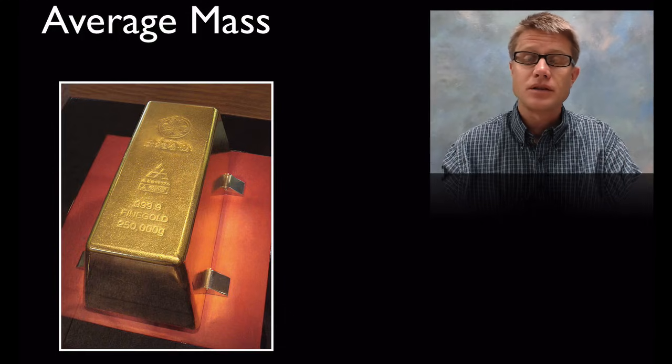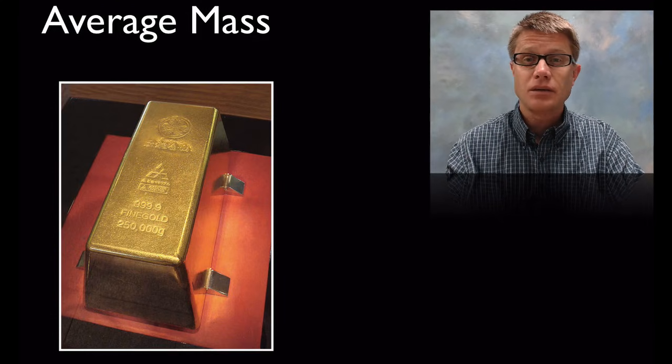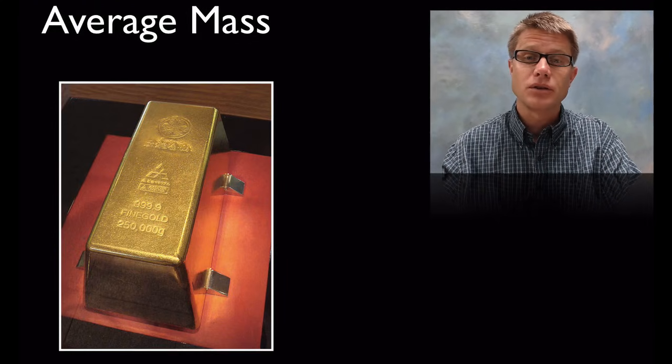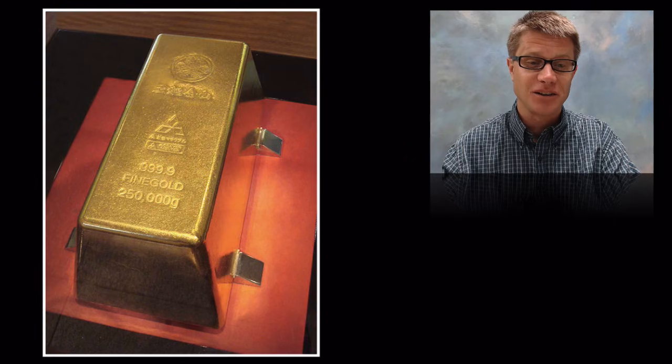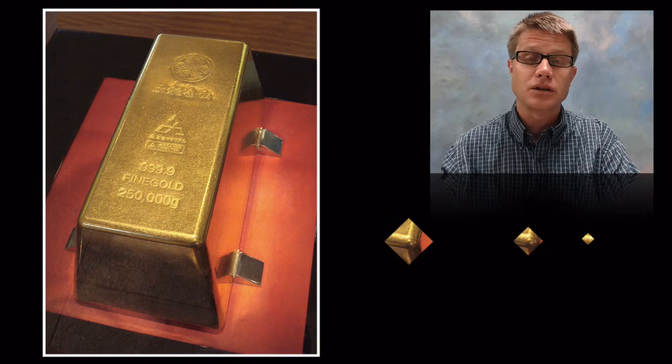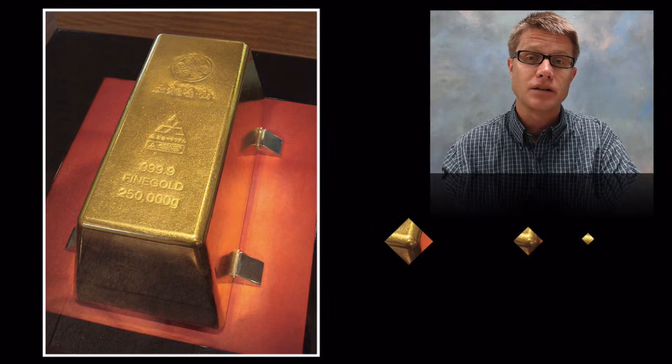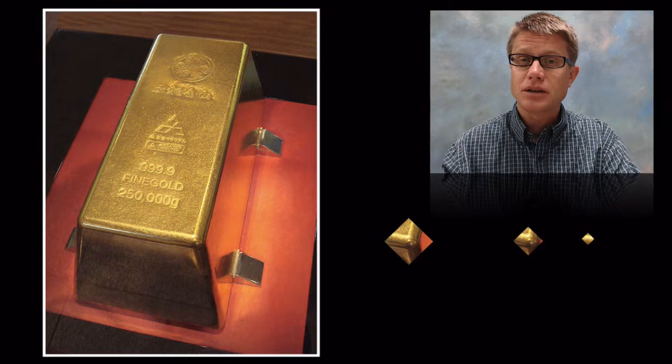And so again one of the big points is that the average mass is going to stay the same no matter how big the sample. In other words, the average mass of this, which is the largest gold bar ever created, it would be worth about 11 million dollars. So it's about 500 and some pounds. If we were to take the average mass of that whole gold bar or the average mass of a section of it or a smaller section or a smaller section, it doesn't matter how small the section is. It's going to have the same average mass. And that's because it's made up of these atoms.